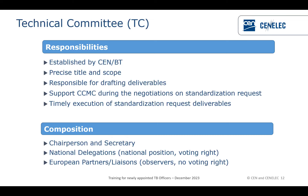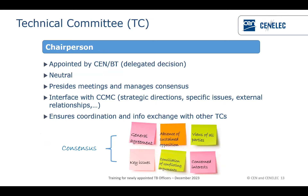The TC is composed of a chairperson, usually coming from industry and appointed by the member holding the TC, plus a secretariat held by that member. There are national delegations, European partners, liaison organizations, and sometimes observers from the Commission. The chairperson is appointed by CEN-BT on proposal from the secretariat member, with the decision taken as a delegated decision. By definition, the chairperson needs to be neutral — presiding meetings, managing consensus, interfacing with CCMC on strategic decisions, and ensuring coordination with other TCs.